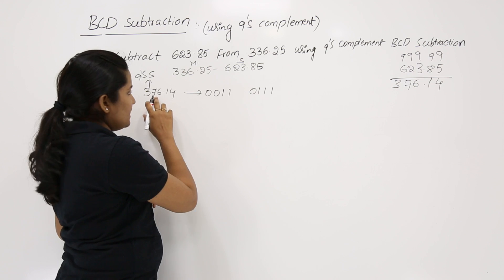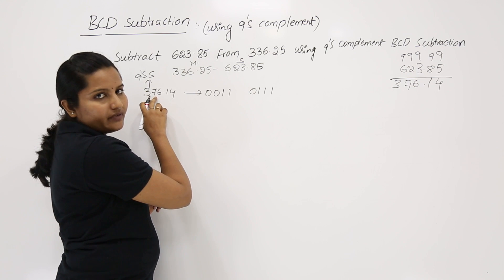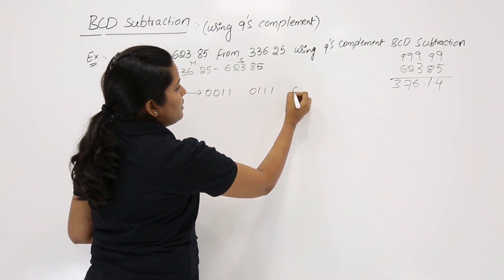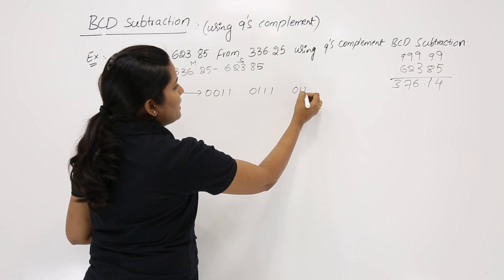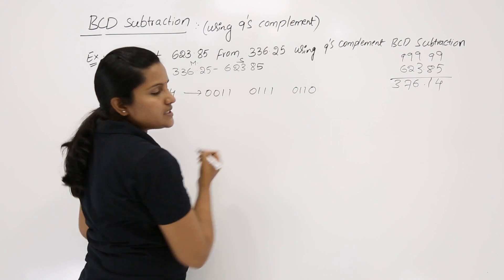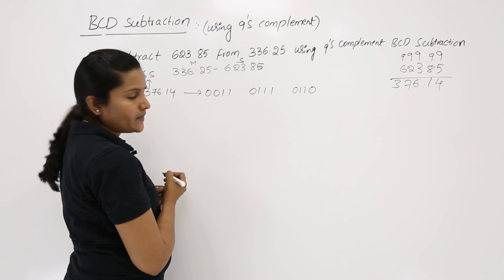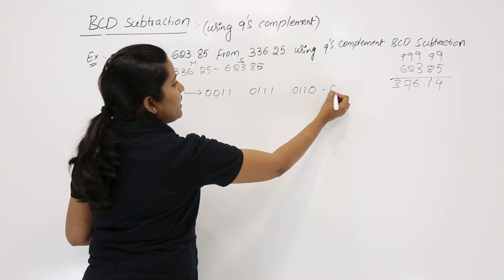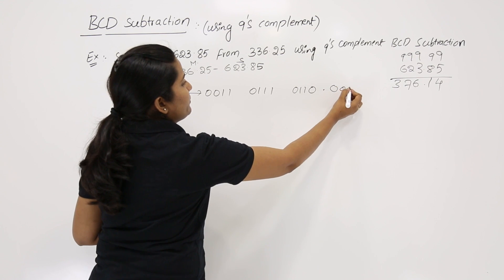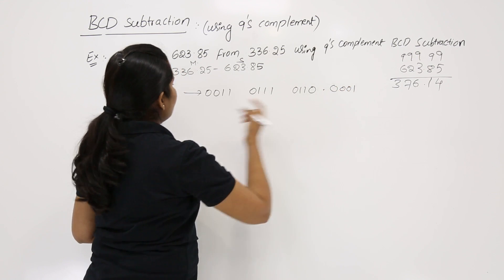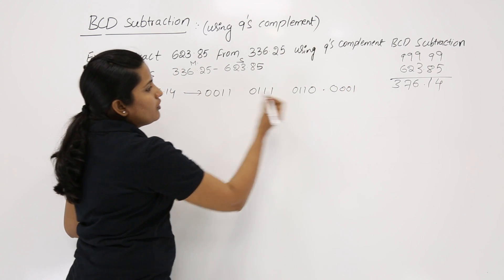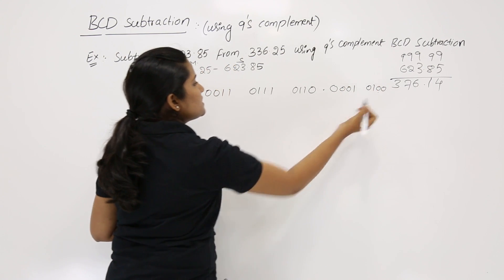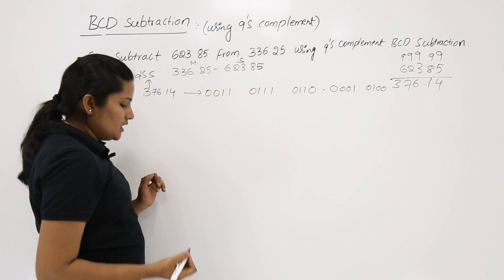Continuing the BCD encoding of 376.14: for 1: 0001; for 4: 0100. So the full BCD code for 376.14 (the 9's complement of the subtrahend) is 0011 0111 0110 . 0001 0100.